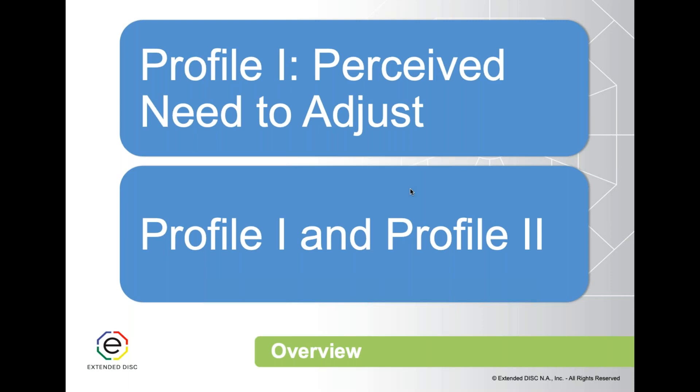Sometimes Profile 1 and Profile 2 can be very similar, but often they are different. Think of Profile 1 as a snapshot — a picture of how you felt when you took the questionnaire. It's your more transient profile; it changes as your environment tends to change. If a person takes this questionnaire six months apart, Profile 1 would be expected to change somewhat, and can actually change quite a bit.